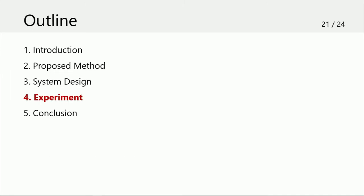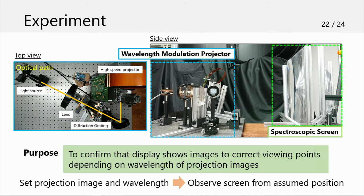Next, I will talk about the experiment using the prototype of the system. We made a prototype of the proposed system based on our design to conduct the experiment. The system uses a halogen lamp as the white light source. The experiment purpose is to confirm that the display shows images to the correct viewing point depending on the wavelengths of the projection images. We took photographs of the display image from assumed positions after setting the projection image and its wavelengths, and did this for several wavelengths.